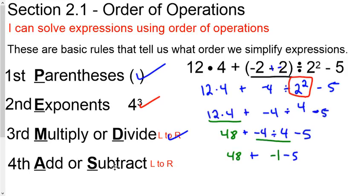Let's go through and do our addition or subtraction left to right, whichever comes first. Additions first, so that makes it 47 minus 5. And that's our last bit. Subtraction, 47 minus 5 is 42. That's how you handle the order of operations.